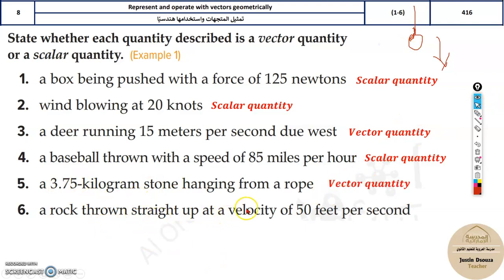A rock thrown straight up at a velocity of 50 feet per second will also be a vector - direction and speed.